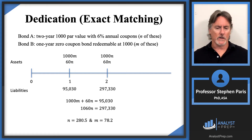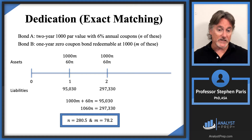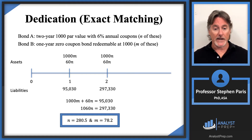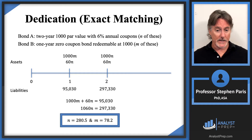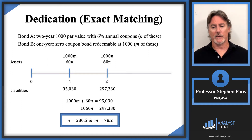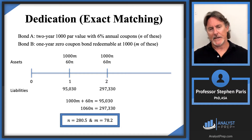With n = 280.5, plugging back into the first equation gives m = 78.2. So the answer is to buy 280.5 of Bond A and 78.2 of Bond B.